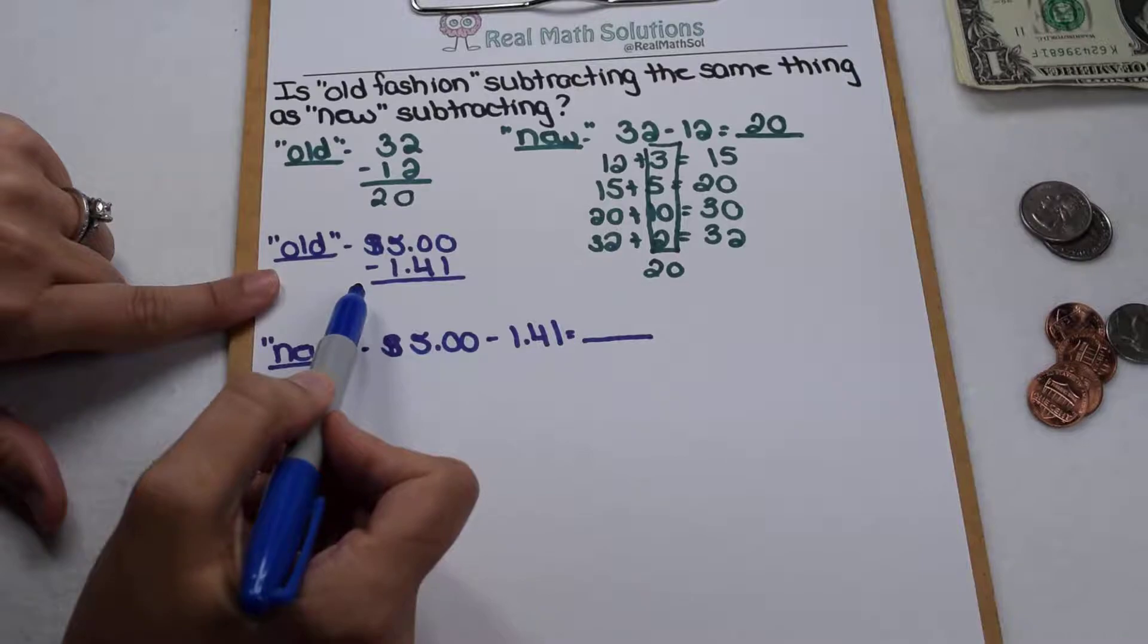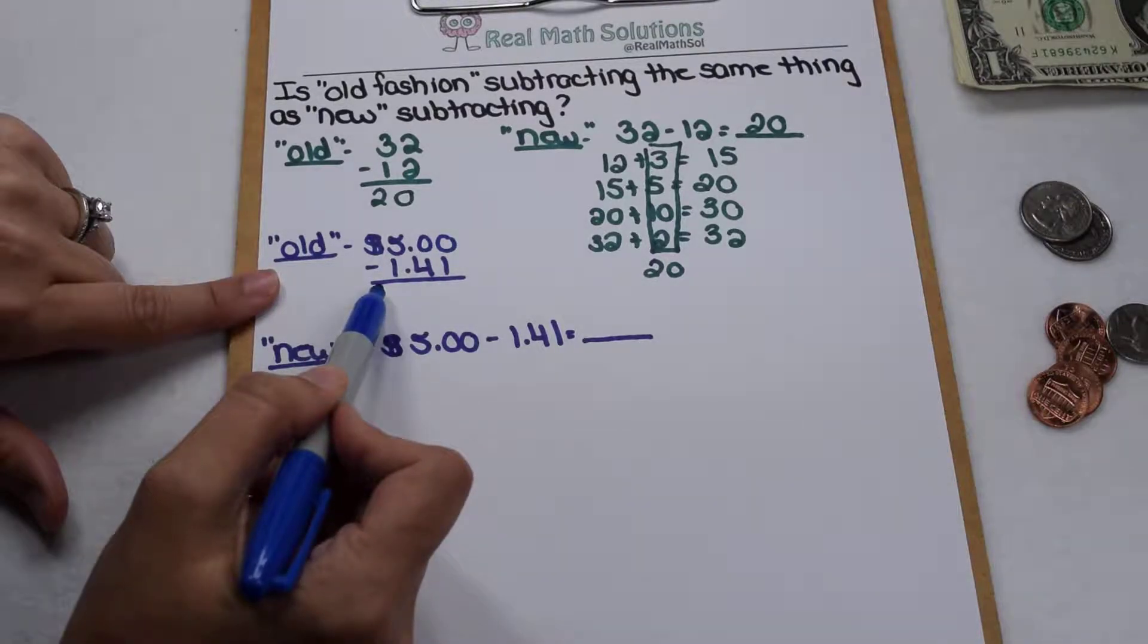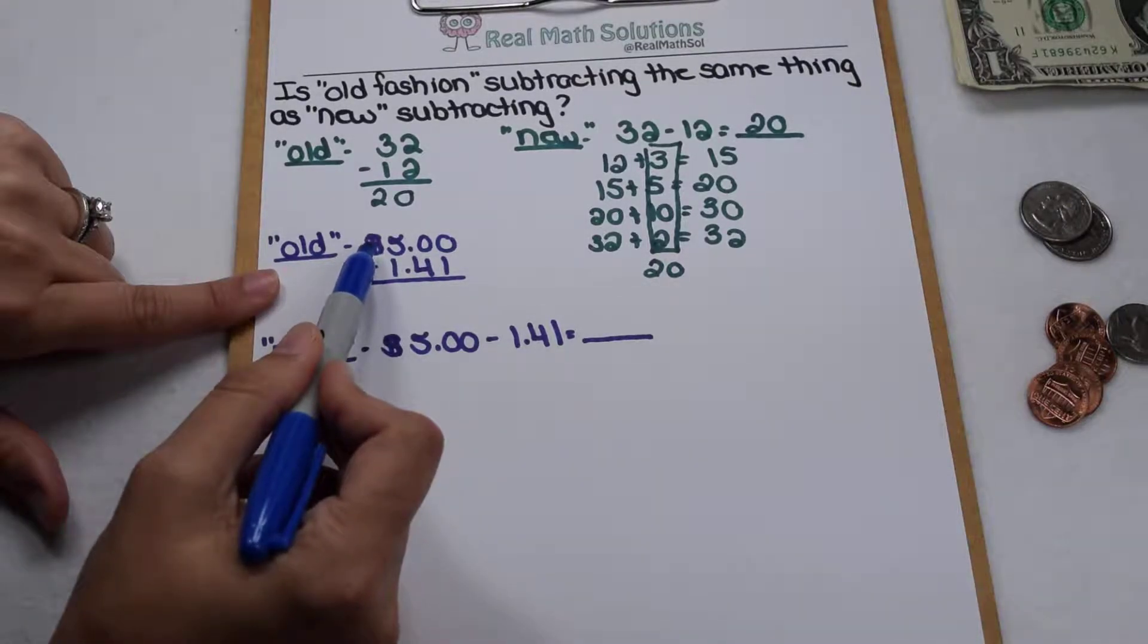Most of us at some point have been tasked with counting change and not having a cash register to tell us how much to give back. So if we had somebody buy an item for $1.41 and they paid us with a $5 bill.